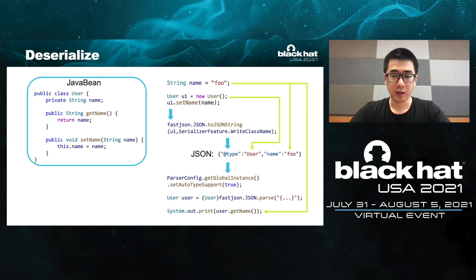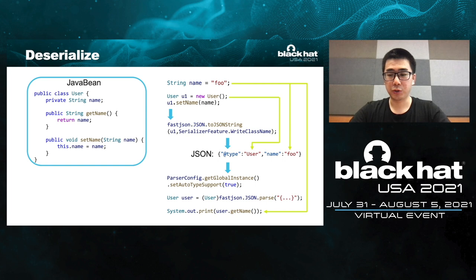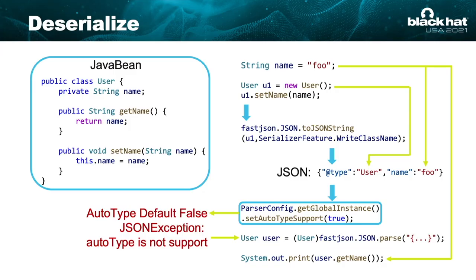You can see the output JSON. The key '@type' has value 'user' — that is the class name of the object — and the following is the field name. Then, use method setAutoTypeSupport to enable the AutoType feature, and use JSON.parse to deserialize this JSON string to a user object with name 'full'. AutoType is a very important feature of FastJSON deserialization. It's the flag about whether FastJSON can deserialize any non-presupposed classes automatically without other configuration. It's false by default.